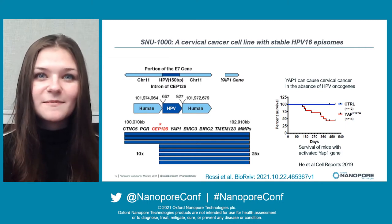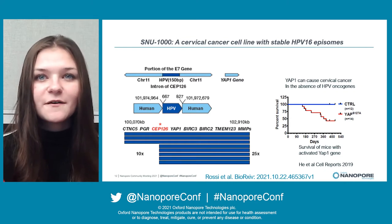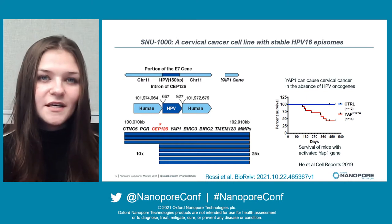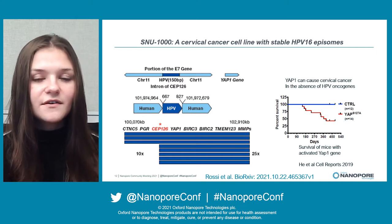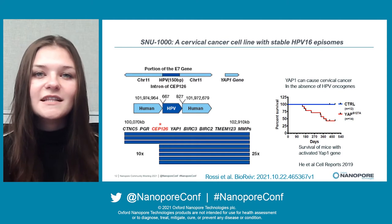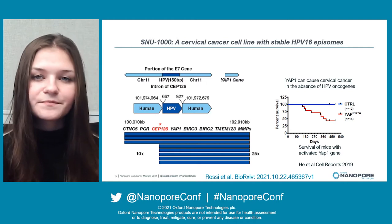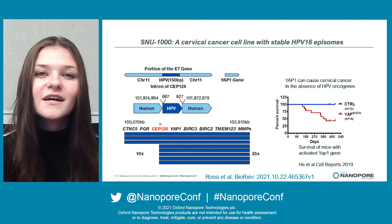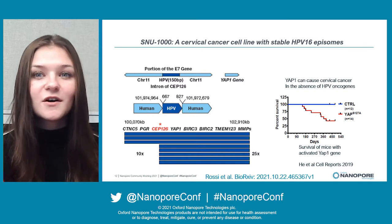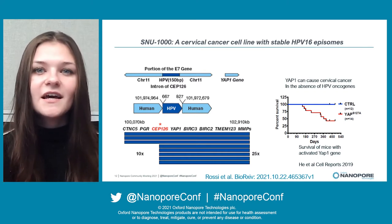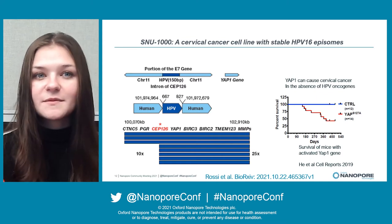SNU1000 is a cell line reported to have both epizomal and integrated HPV16. Whole genome sequencing revealed a 150 base pair fragment of HPV integrated into the intron of the CEP126 gene on chromosome 11. This fragment has a portion of the E7 gene, although it is not large enough to encode any full-length proteins. Interestingly, the integration also resulted in amplification of the YAP1 oncogene and the BRK2 and BRK3 genes, which are involved in resistance to the immune response. YAP1 gene activation was shown to cause cervical cancer and reduce survival in mice in the absence of integrated HPV oncogenes, making YAP1 an important factor in cervical carcinogenesis. This is a novel mechanism in which the integrated HPV fragment does not express E6 or E7 oncogenes, but results in amplification and overexpression of cellular oncogenes.